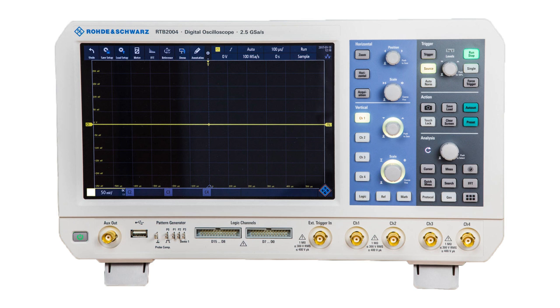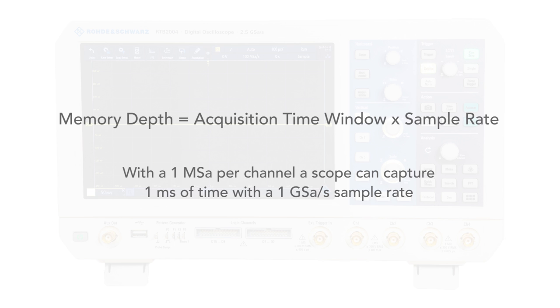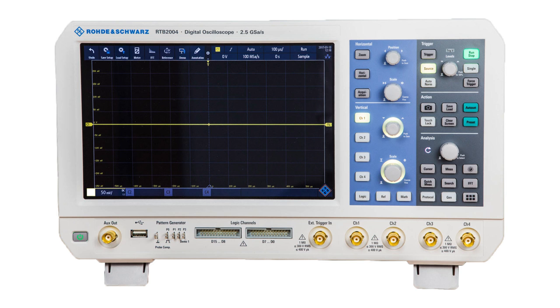It also needs a sample rate that's at least double the bandwidth to satisfy the Nyquist sampling requirements. Typically, the industry has gone to a sample rate of at least 2.5 times the bandwidth. Third is memory depth — the more memory depth you have in your scope, the more time you can capture at the maximum sample rate, enabling you to retain the full bandwidth over a wider range of time bases.